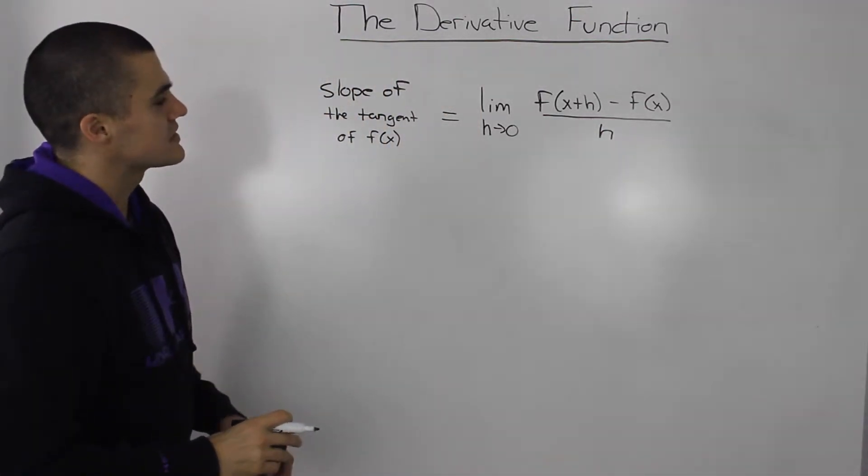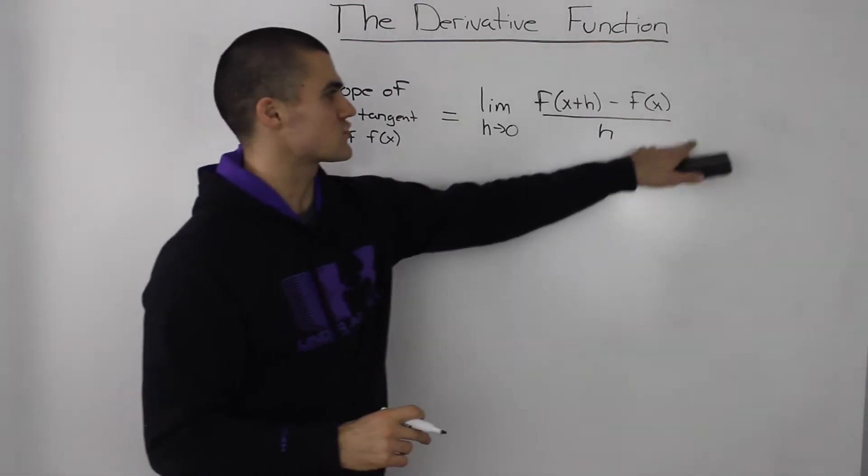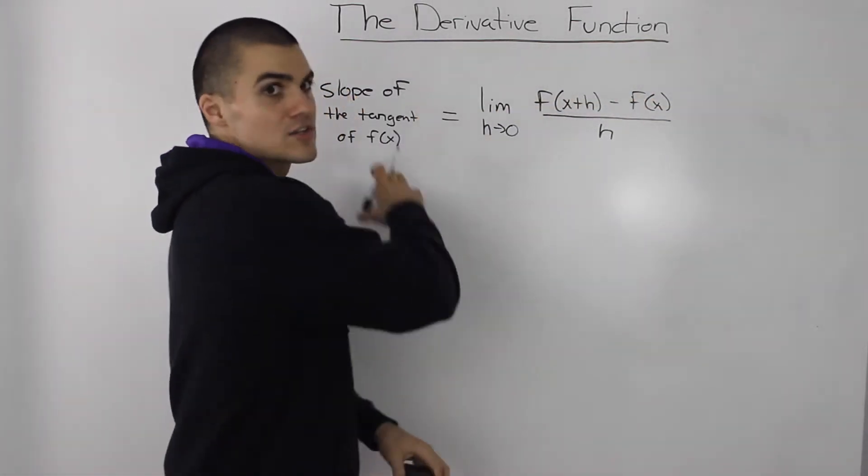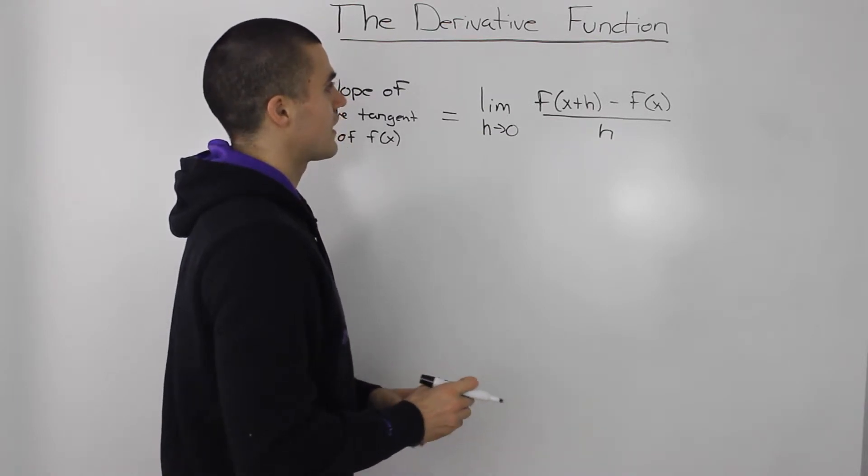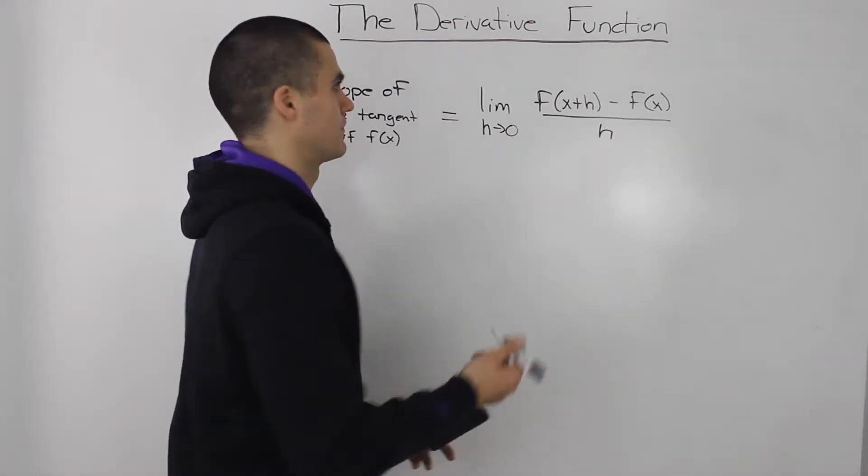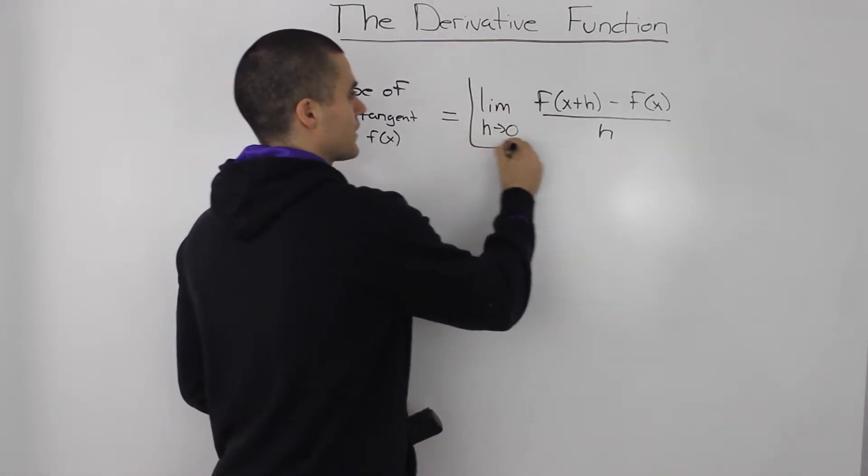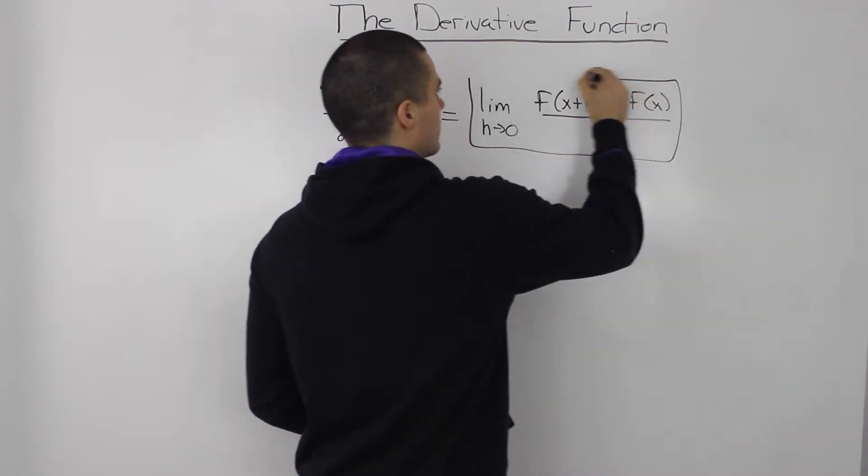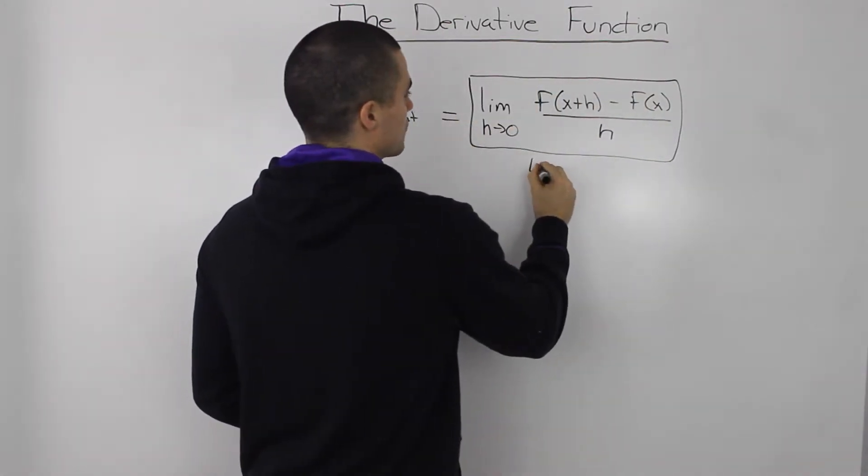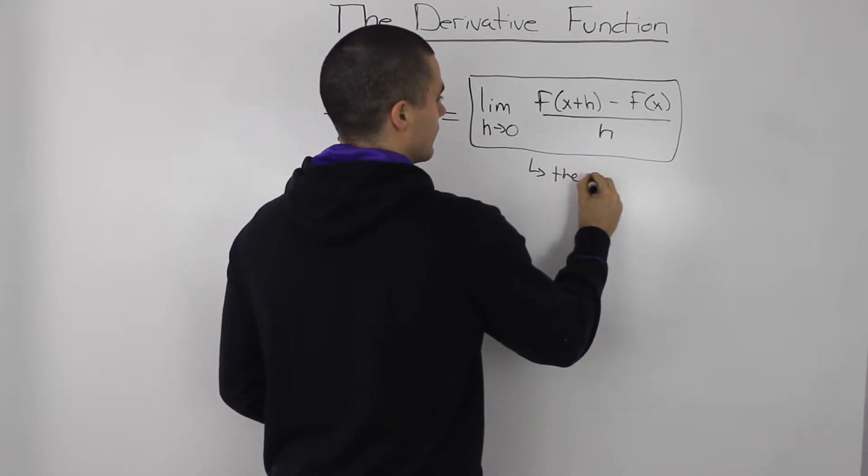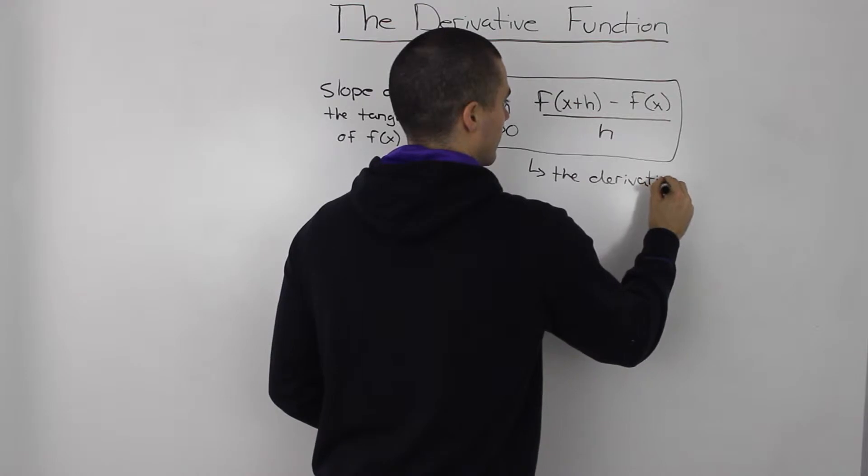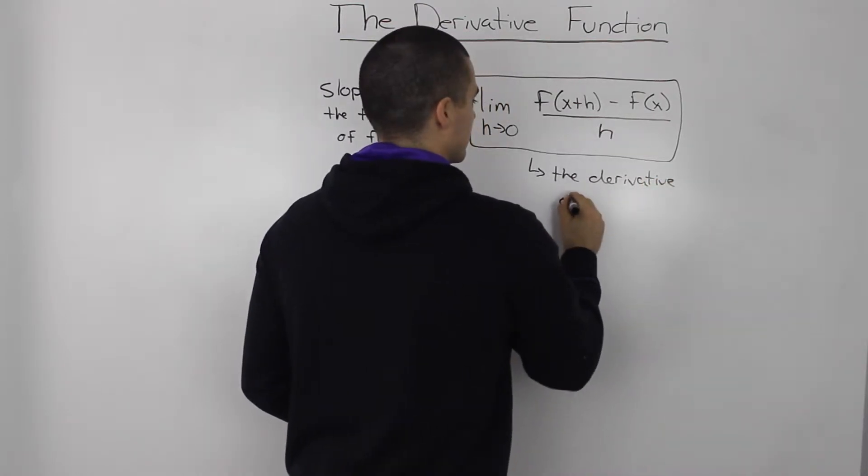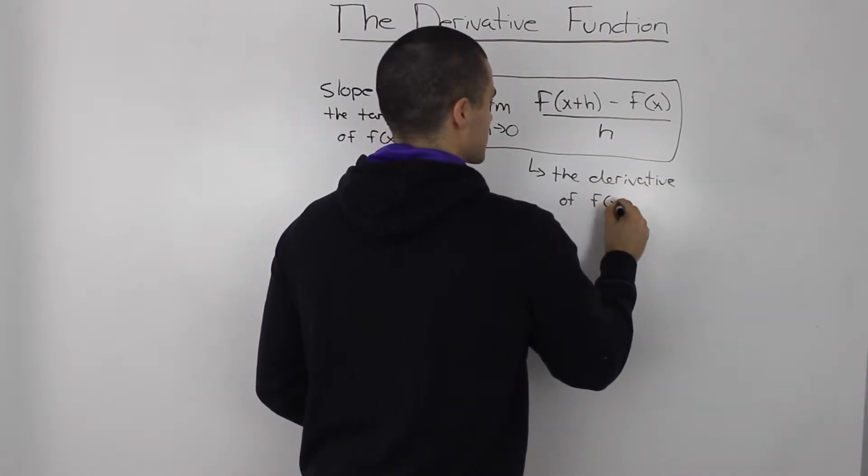Now since we're using this formula a lot, we're finding the slope of tangent a lot in this course, they decided to give it a name. And this whole thing right here is basically called the derivative of f of x.